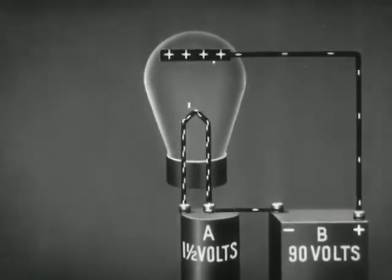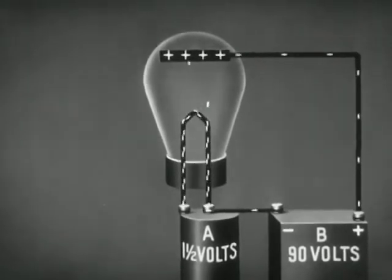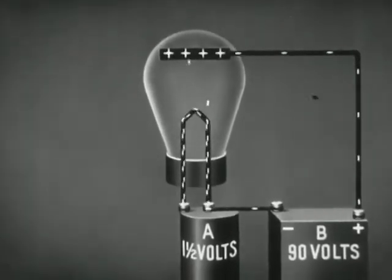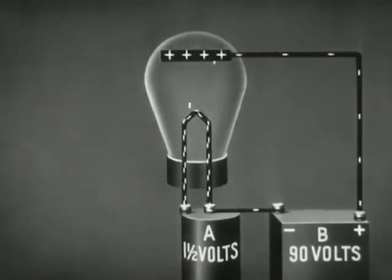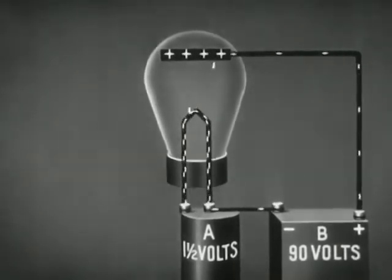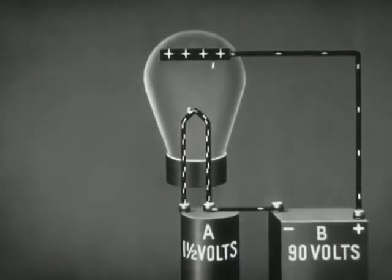A stream of electrons thus flows from the filament to the plate inside the tube, to the battery, and back to the filament. This is the plate circuit.